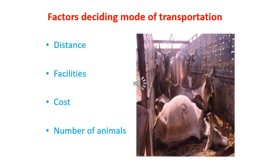Factors deciding the mode of transportation: first is distance — up to 10 km animals can walk; up to 100–500 km, by truck; longer distances, by railway. Second is facilities — if railway facilities are unavailable, we must use trucks. Third is the number of animals — when numbers are very small, walking or truck is appropriate. Finally, cost must also be kept in mind when selecting the proper mode of transportation.